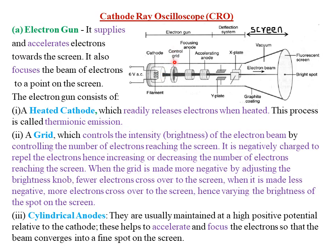The second part is what we call the grid, also called the control grid. As the word suggests, the control grid's function is to control the intensity of the electron beam — or in other terms, to control the brightness of the electron beam. Brightness and intensity can be used interchangeably. It does so by controlling the number of electrons reaching the screen. The grid is usually negatively charged, and since cathode rays consist of negatively charged electrons, you are going to have repulsion. So if most of the electrons are repelled, fewer cathode rays reach the fluorescent screen, and the brightness of the spot will be reduced or the spot will be dim.